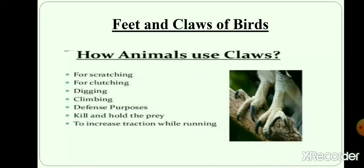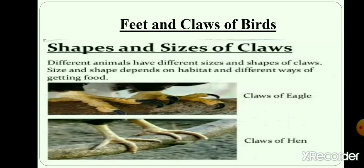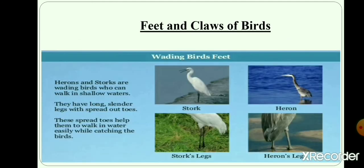Feet and claws of birds. Birds have different types of claws that perform different functions. Birds use their feet and claws to walk, climb, hold their food, swim and perch on trees. Claws have long, curved nails which are used for self-defense. The shape of a bird's feet and claws depends on their food habits and the way they move around. Now we are going to discuss in detail about the different feet and claws of birds.